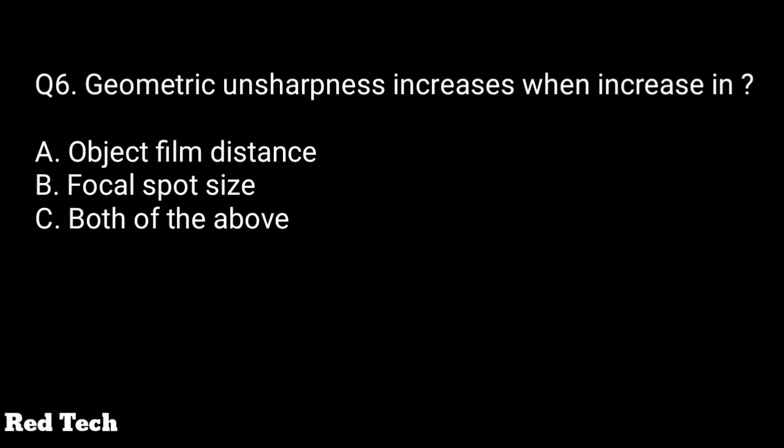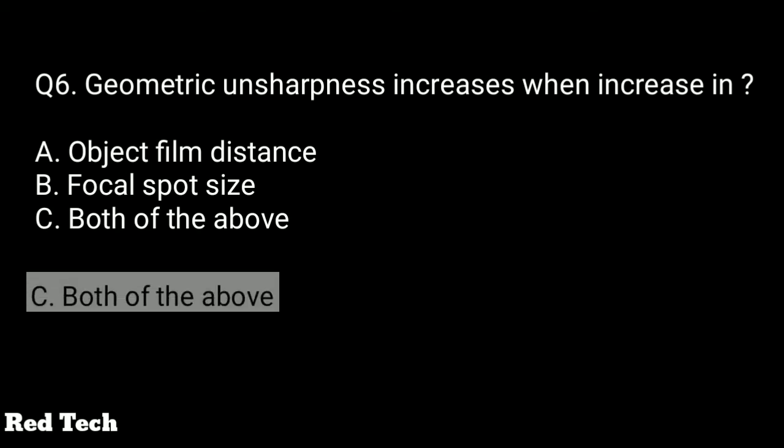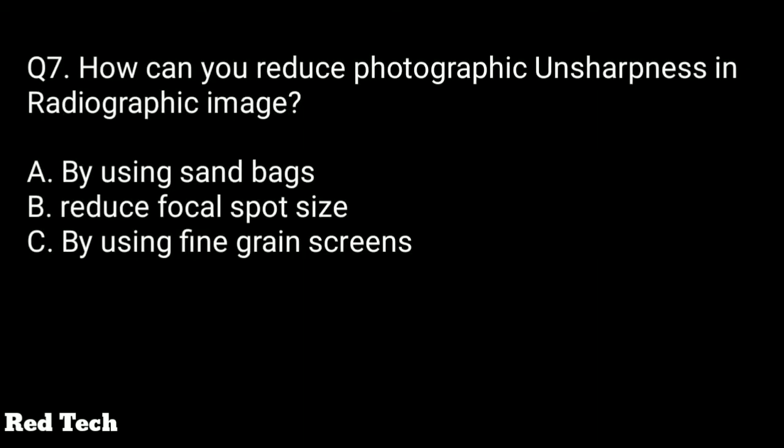Question number six: geometric unsharpness increases when there is an increase in which option? Object-to-film distance, focal spot size, or both of the above? The right answer is both of the above. Geometric unsharpness depends on both object-to-film distance and focal spot size — when both increase, geometric unsharpness also increases.